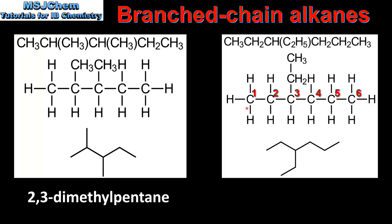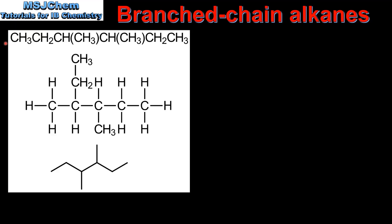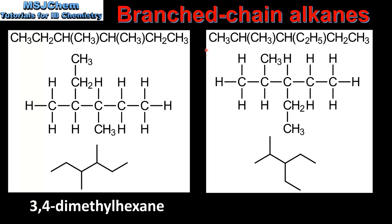In our next example the longest carbon chain is 6 carbon atoms. In this molecule we have an ethyl group on carbon number 3. The name of this molecule is 3-ethylhexane. In the following example the longest carbon chain is 6 carbon atoms. There are two methyl groups on carbon number 3 and carbon number 4. Therefore the name of this molecule is 3,4-dimethylhexane.